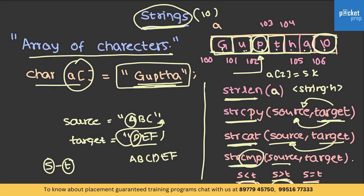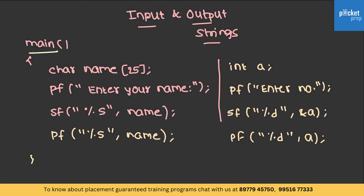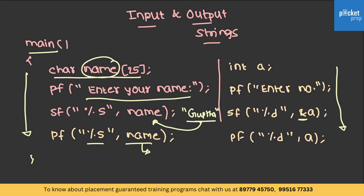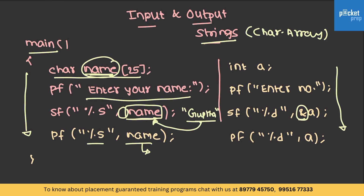Let's see how input and output of strings generally happens. I have defined a main function with a character array. When asking to enter a name — for example 'Gupta' — the input is stored in the character array named 'name', and it can be printed with the same format specifier. One thing to observe: when taking input for a string, you do not need to use the address-of operator, unlike with integers. This is because the string is a character array, and the array name is a mnemonic which already represents its base address. So specifying the name of the array already provides the address — it makes no difference whether you use the ampersand or not.